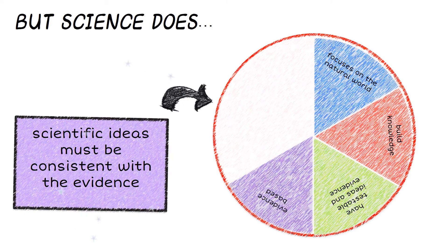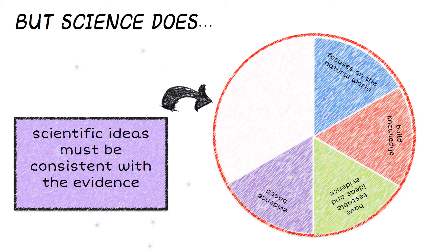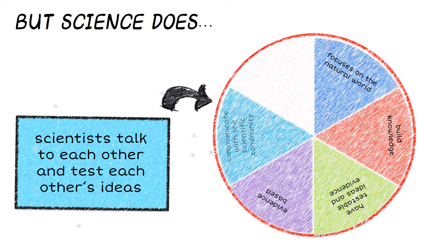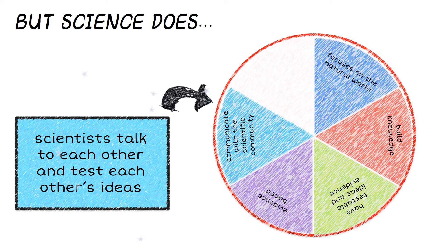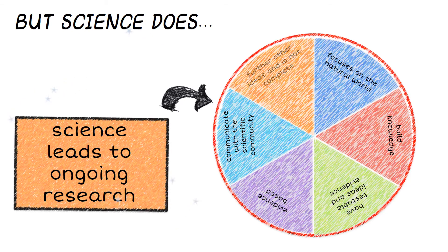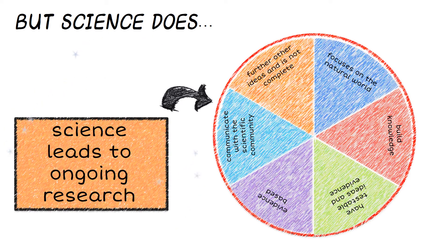Once evidence is gathered, things like research from a lab, observations, and/or computer-generated models, the evidence will be shared with the scientific community and either fail or withstand public scrutiny. But in any case, it will further other ideas, questions, and discoveries that lead to more scientific research.